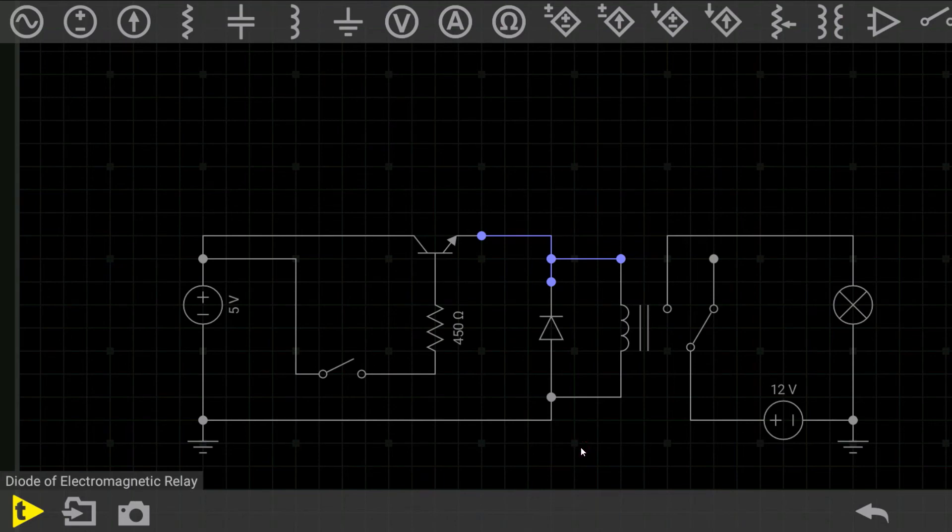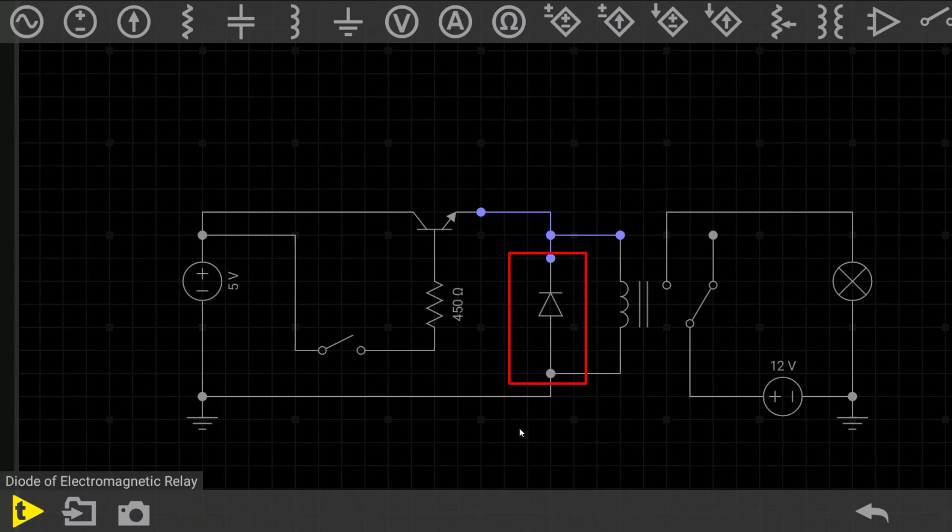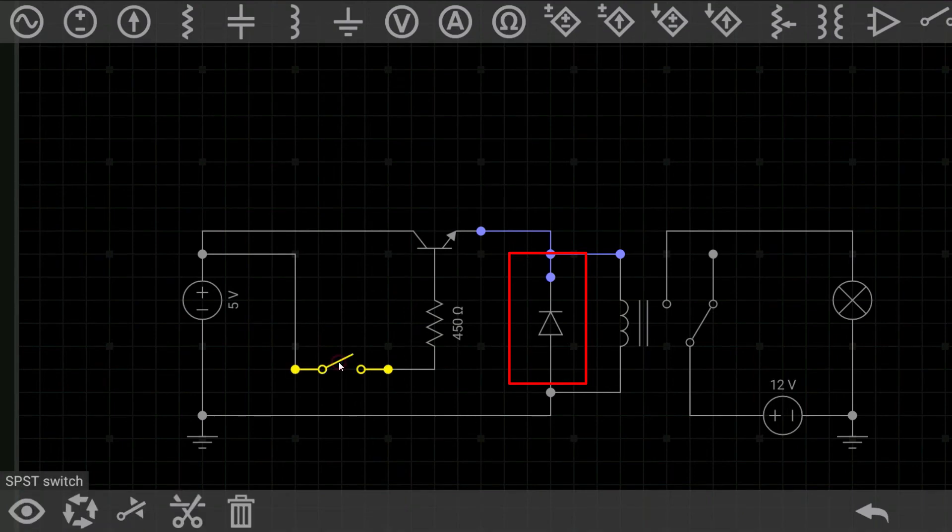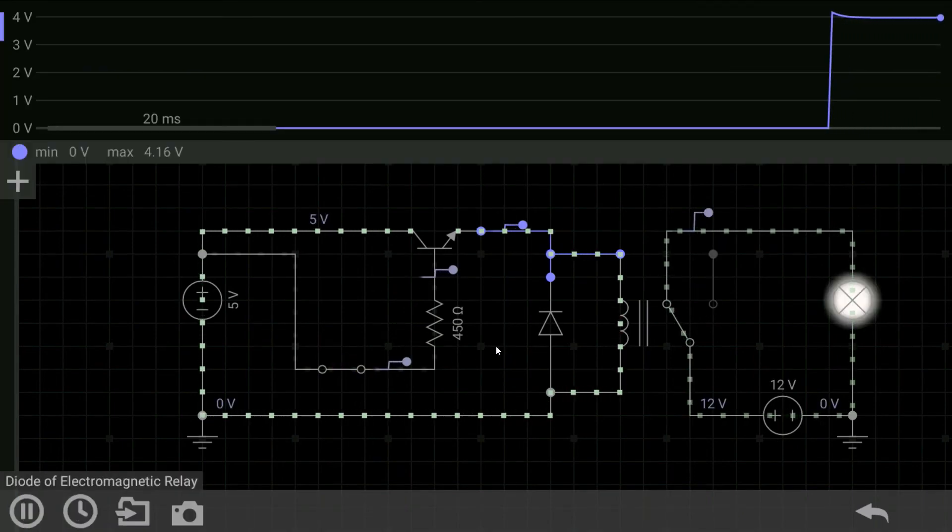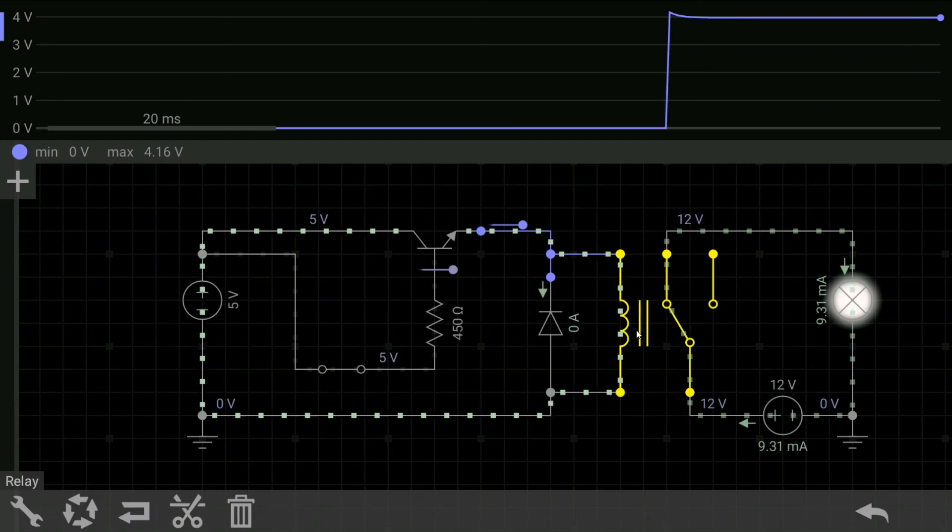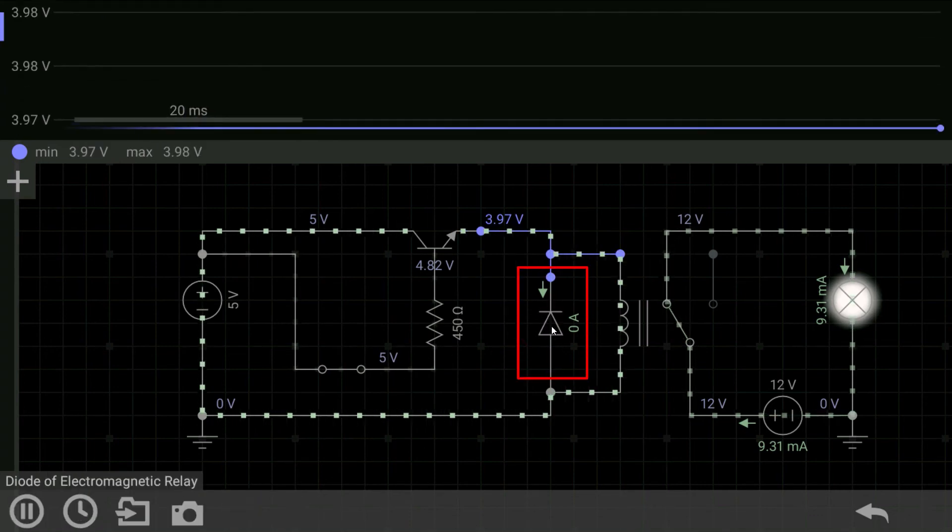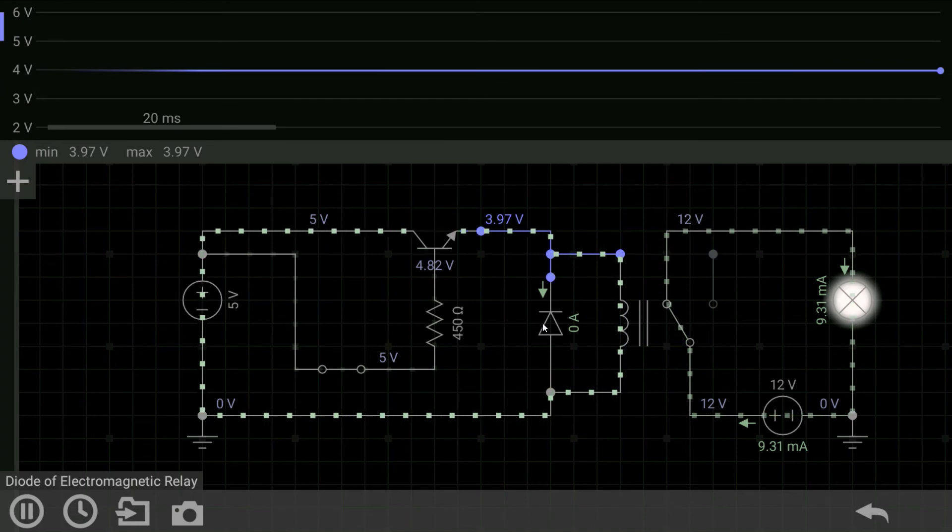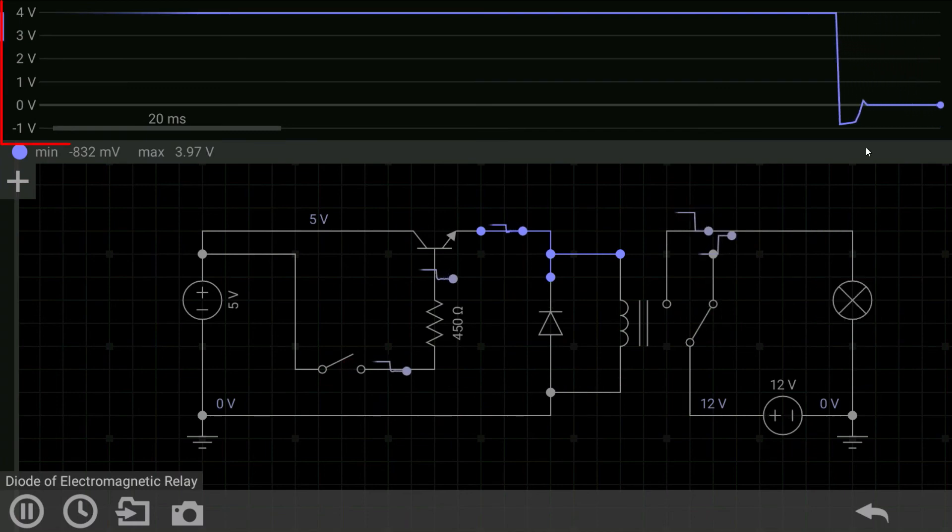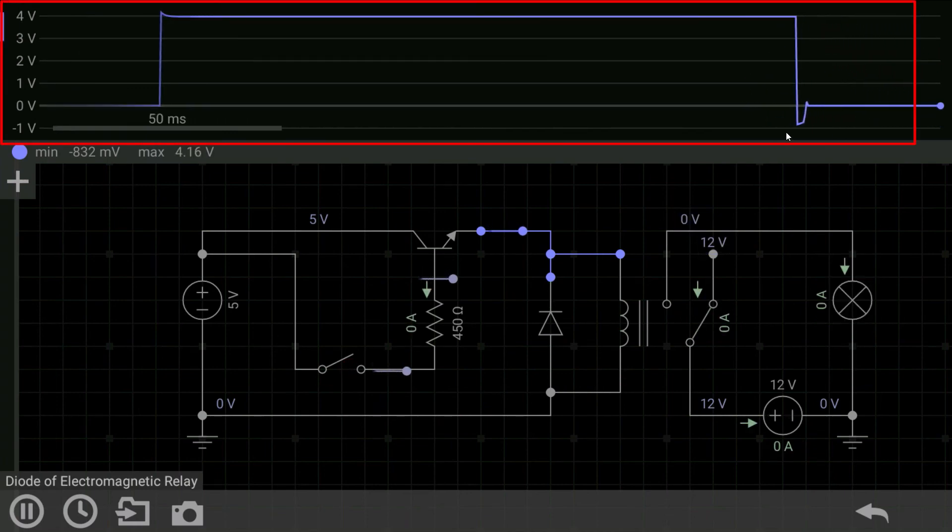But here's a question: how does the flyback diode work in this case? When I am providing base biasing to the transistor, the relay normally works as a switch and creates voltage. But current cannot flow through the diode because it's connected in reverse, and current can only flow through a diode in forward bias, not reverse.